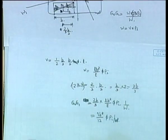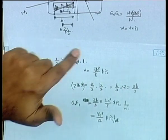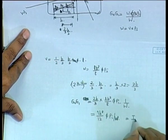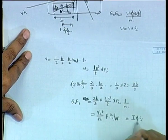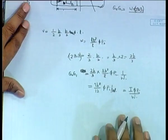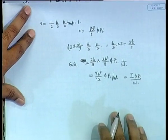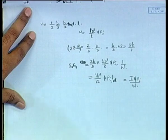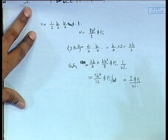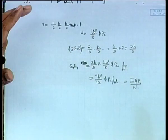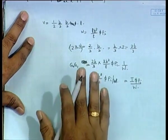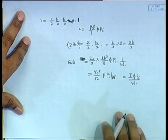Look at L × B³/12 — what is L × B³/12? It is the moment of inertia about that axis. Therefore, let us call this I. So G0G1 = I × φ × ρi / W. You might wonder if it is true for other shapes as well — is it just for a rectangular box that it coincidentally becomes I? Actually, it happens for all shapes. You will get I there, but this rectangular case is simpler and you can understand it clearly.